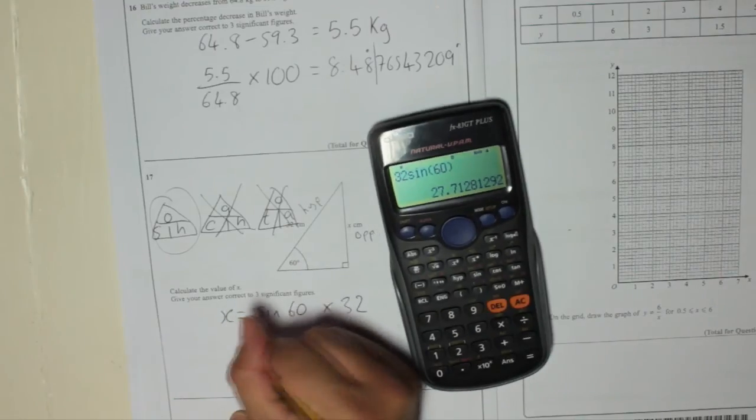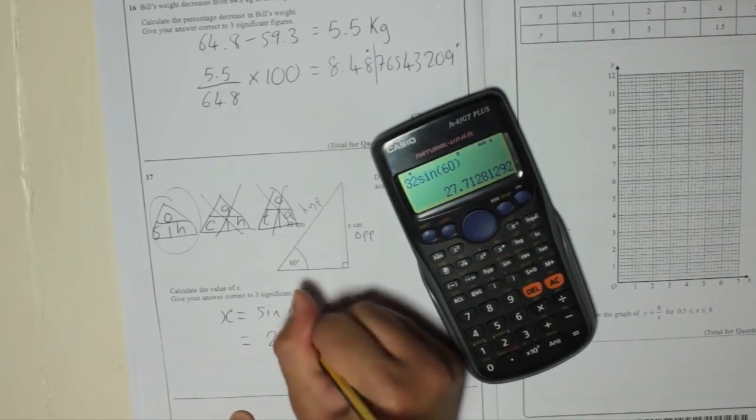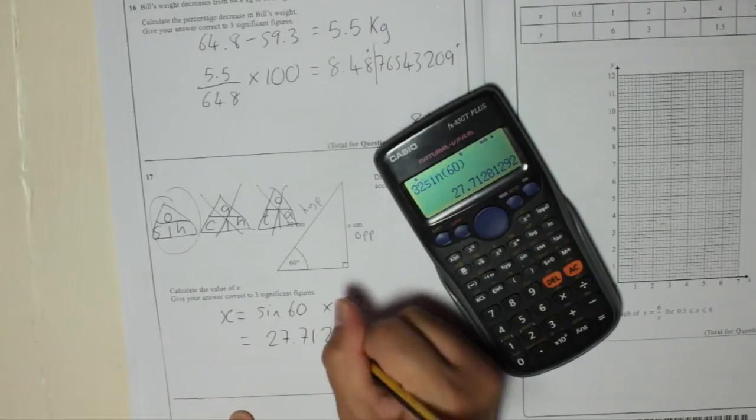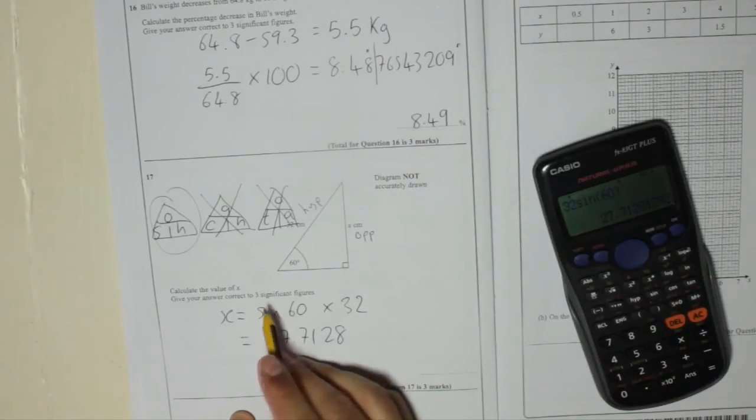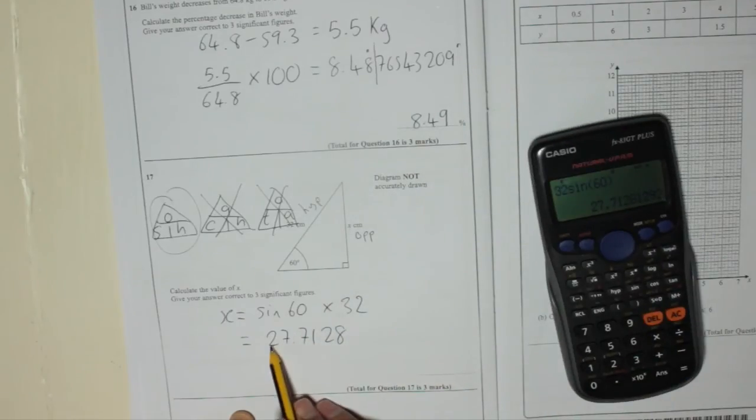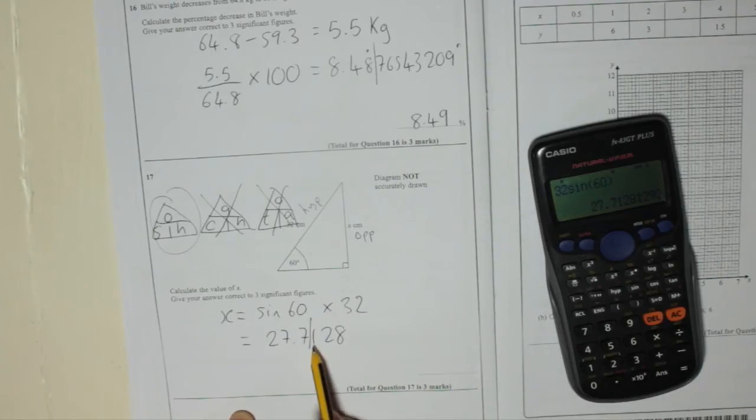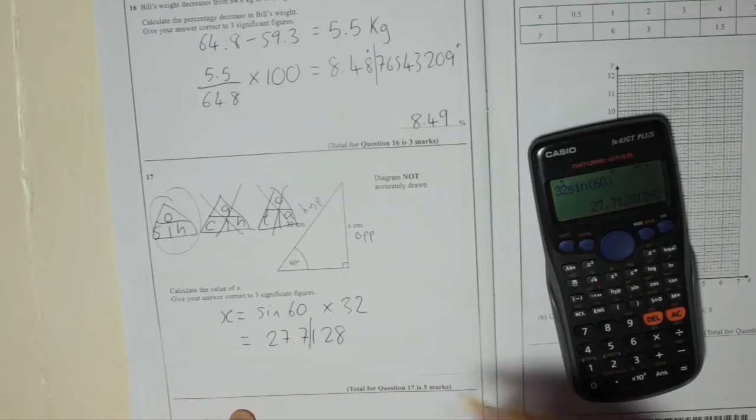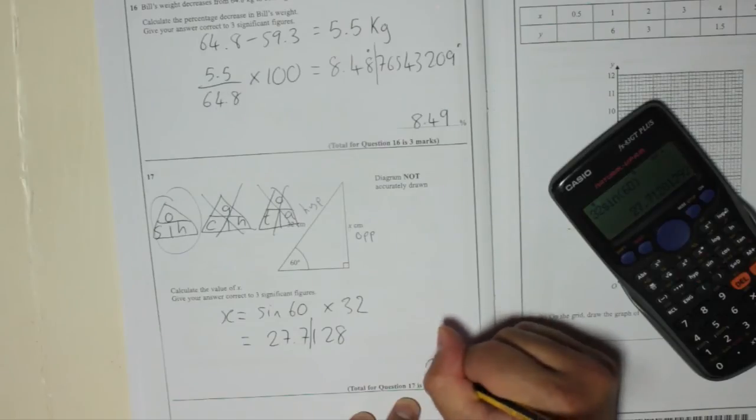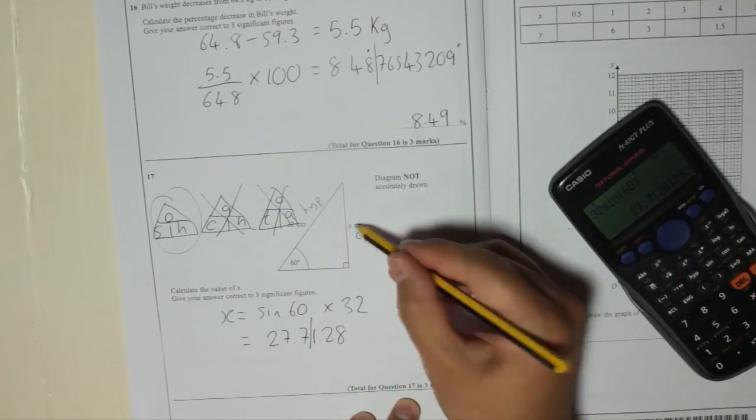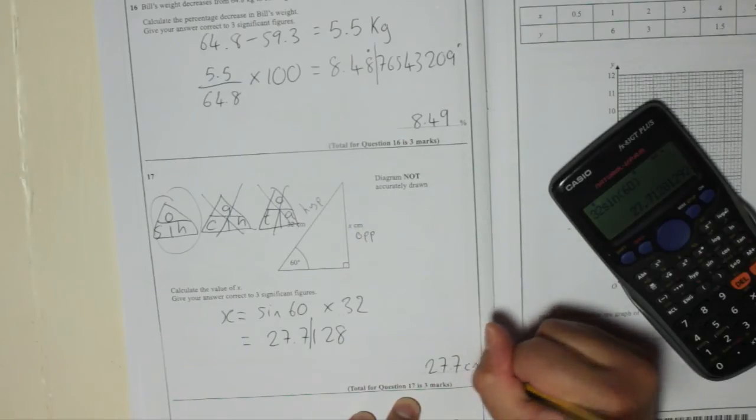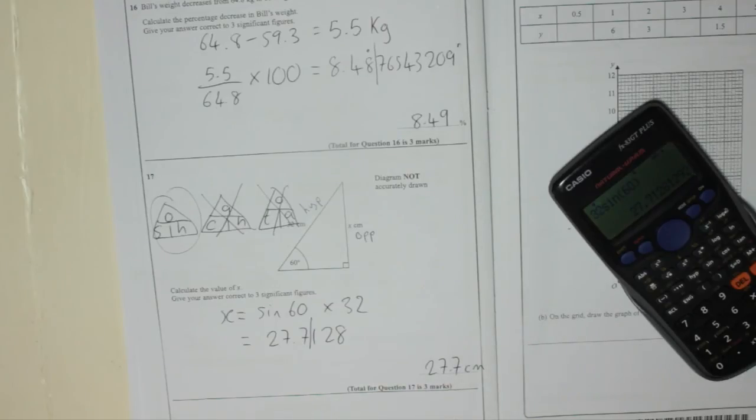So the answer is 27.7128, and so on. It only wants three significant figures, so that's 1, 2, 3. I'll cut off the rest. Look at the first one, that's a 1, because it's small. It doesn't round the 7 up, so it's 27.7. And X is in centimeters. Don't forget your units.